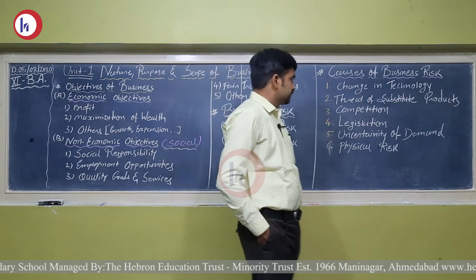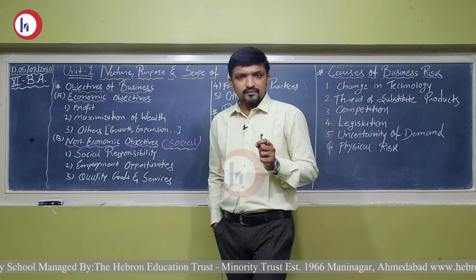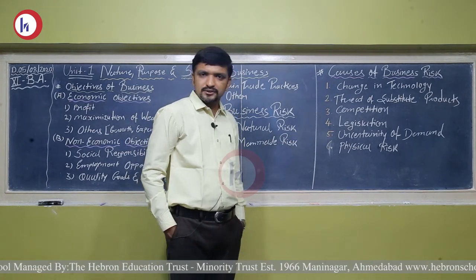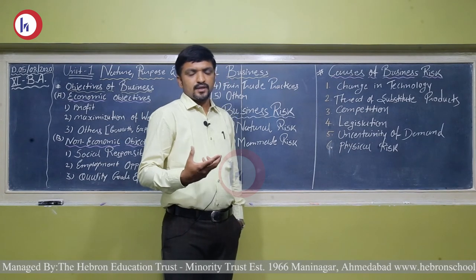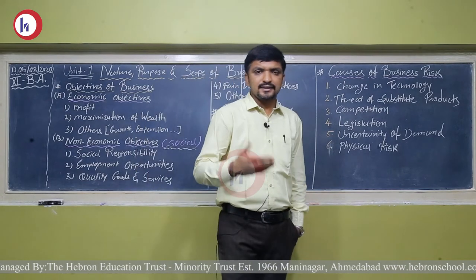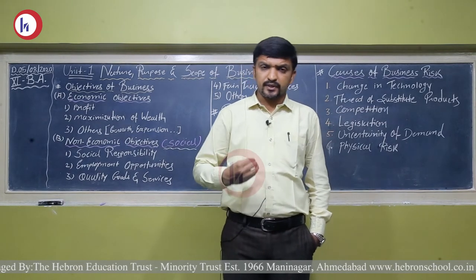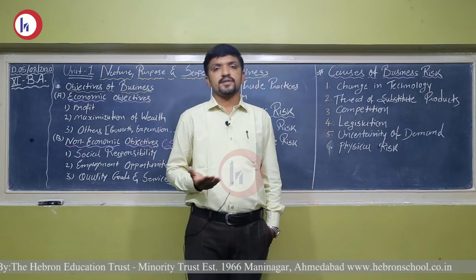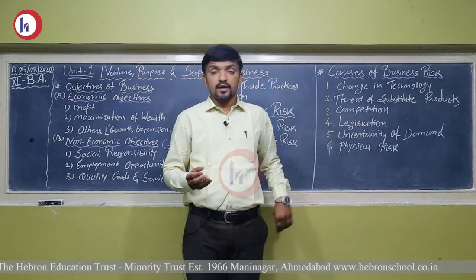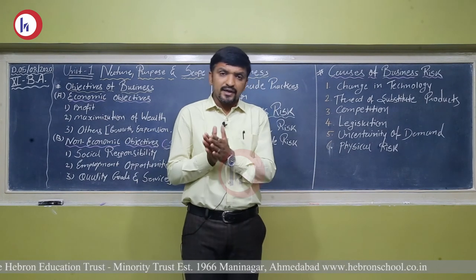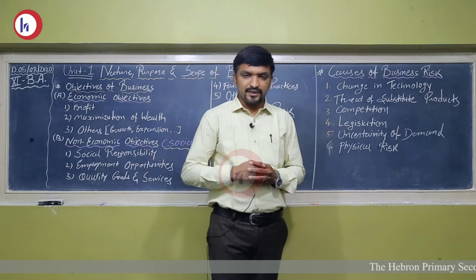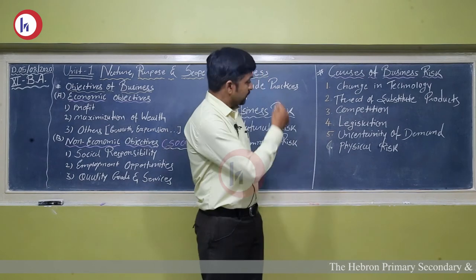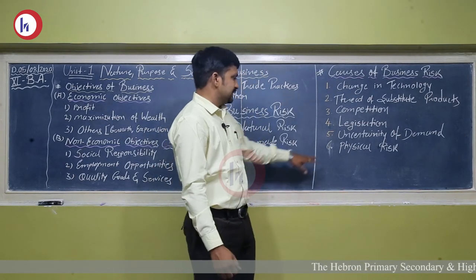Number five is uncertainty of demand. In a market, demand is totally uncertain — yesterday you may have sold 5000 units, today only 2000, and tomorrow possibly 20000. Demand is influenced by various factors. When demand of our product is good, we get good profit; when demand falls or contracts, profit margin reduces, resulting in business risk.